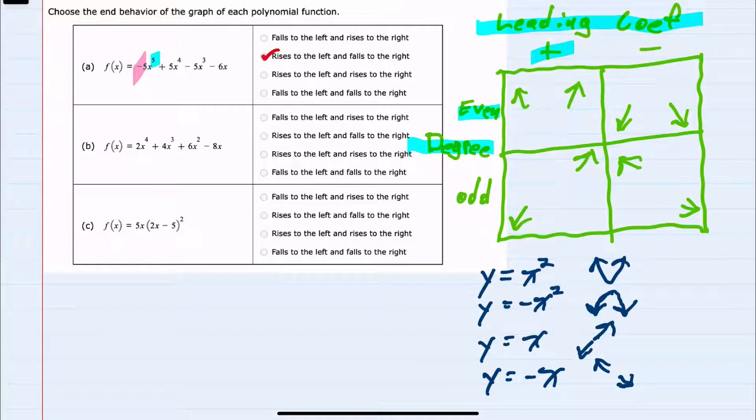Looking at the second example, b, we have an even degree for the leading coefficient. So that will be similar to an x squared or a negative x squared in the end behavior. And since here the leading coefficient is positive,